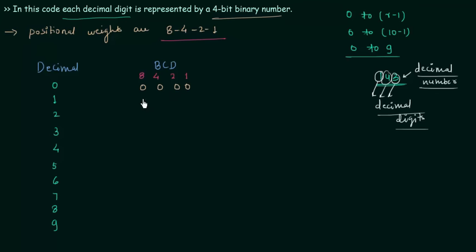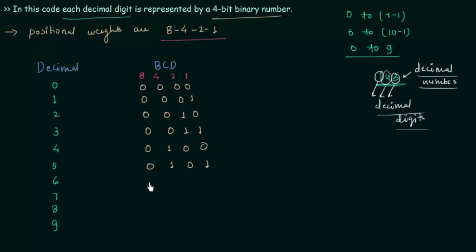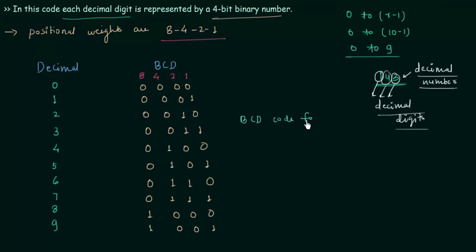For 0, all 4 bits are 0000. For 1: 0001 (LSB weight is 1). For 2: 0010. For 3: 0011 (2+1=3). For 4: 0100. For 5: 0101 (4+1=5). For 6: 0110 (4+2=6). For 7: 0111 (4+2+1=7). For 8: 1000. For 9: 1001 (8+1=9). This set of codes is the BCD code for decimal digits.